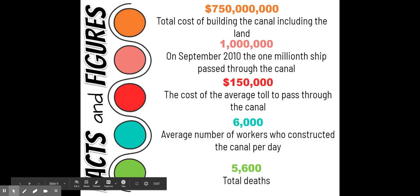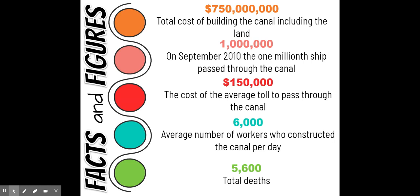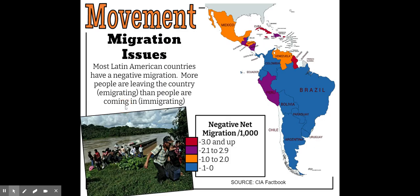There were deaths — about 5,600 — some from yellow fever and disease because having 6,000 people working in tightly confined swampy conditions spreads disease, but most deaths were from incredibly dangerous work. People had to use dynamite and explosives. One of the most dangerous jobs was lighting the dynamite — if the wick went out, someone had to go back and relight it, risking an explosion. It was a fairly dangerous job.